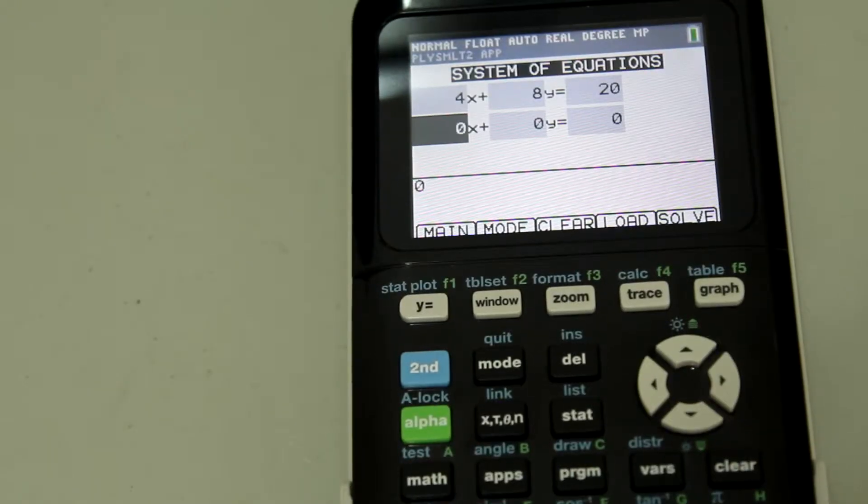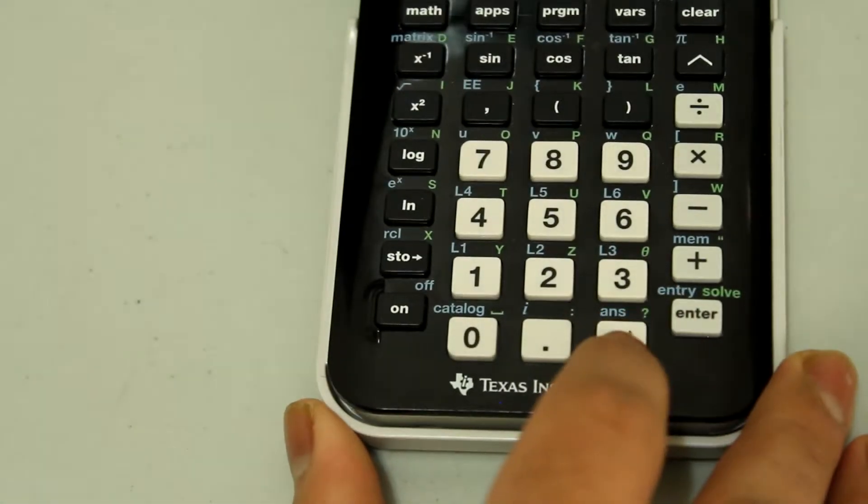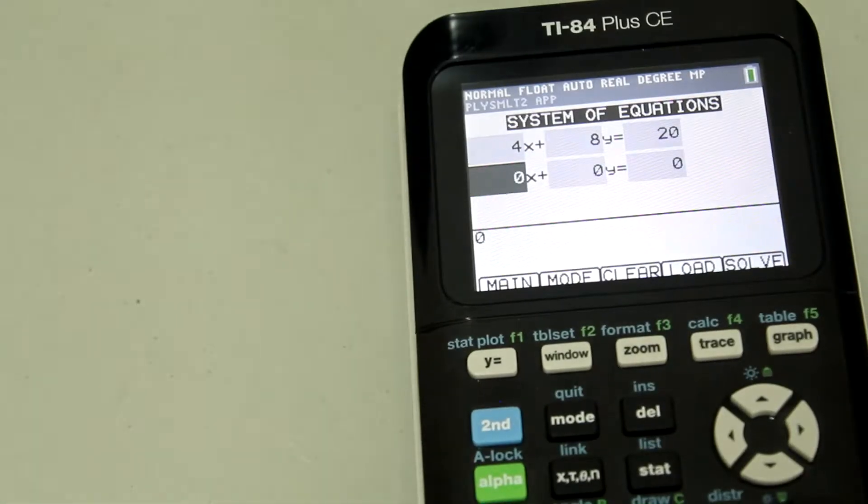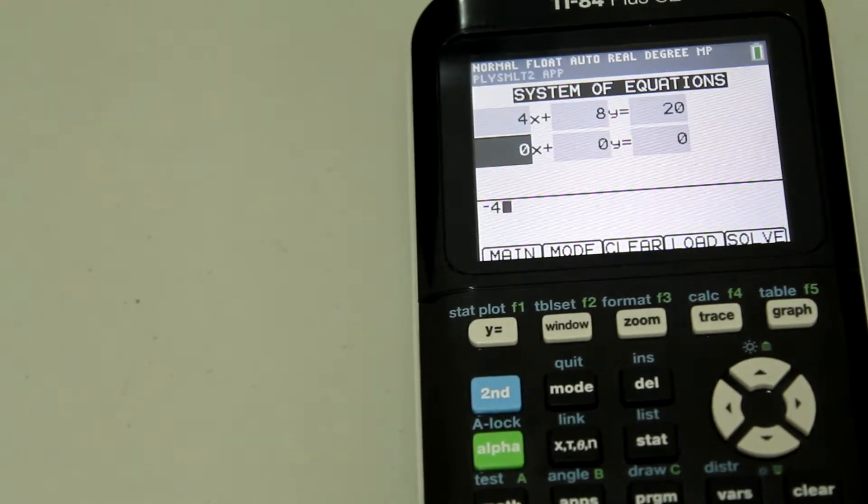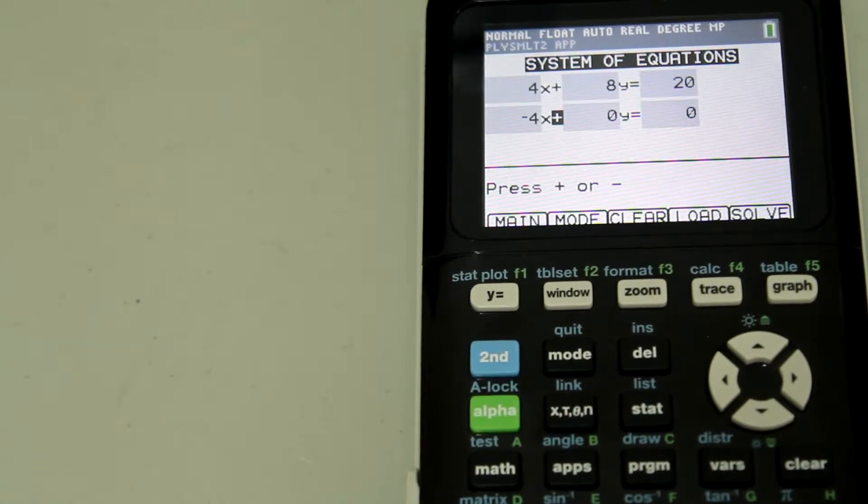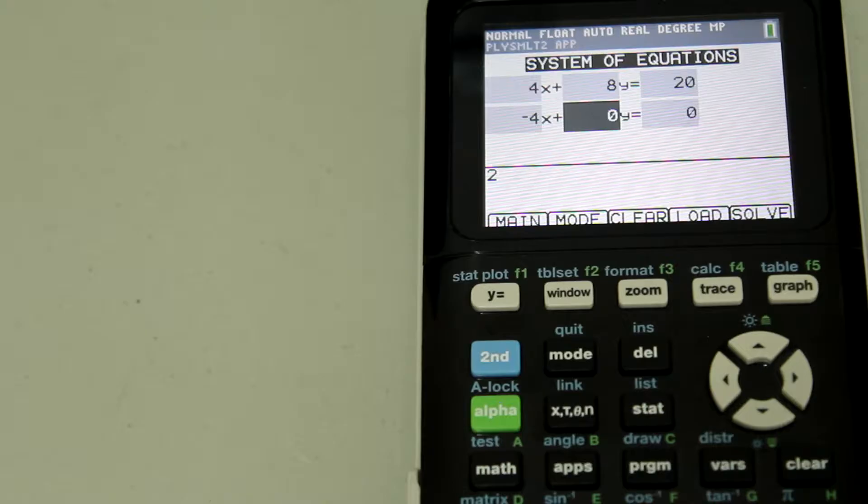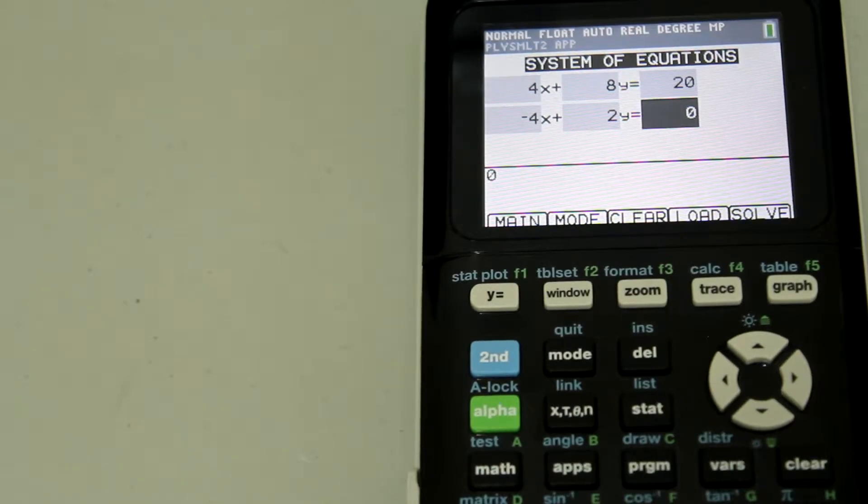Now, when you hit the negative 4, make sure to use this negative sign and not this minus sign. So negative 4, enter, not changing that, so enter again, 2y, so just hit a 2, enter, and the constant is negative 30.